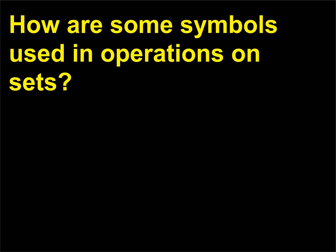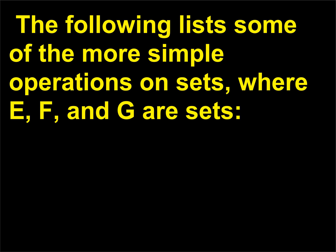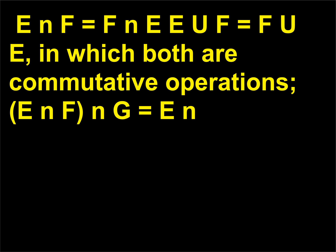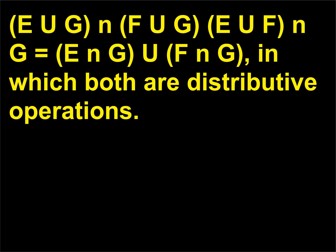How are some symbols used in operations on sets? The following lists some of the more simple operations on sets, where E, F, and G are sets: E∩F = F∩E and E∪F = F∪E — both are commutative operations; (E∩F)∩G = E∩(F∩G) and (E∪F)∪G = E∪(F∪G) — both are associative operations; E∩(F∪G) = (E∩G)∪(F∩G) and E∪(F∩G) = (E∪G)∩(F∪G) — both are distributive operations.